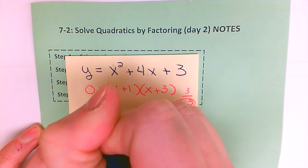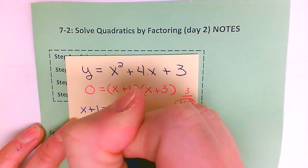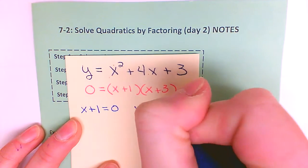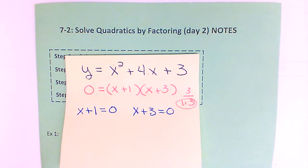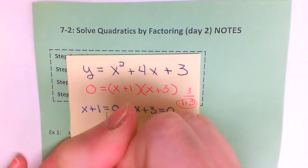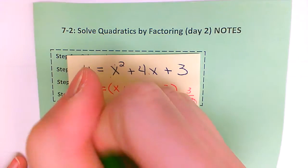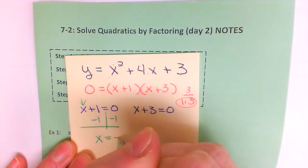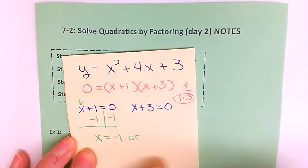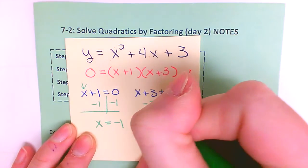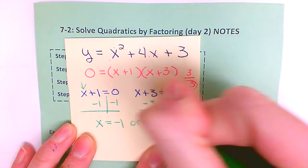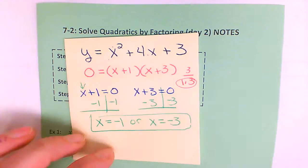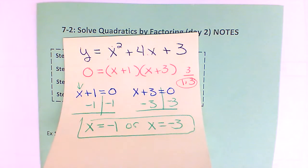Take whatever is in my parentheses — x plus one — and set it equal to zero. x plus three, also set that one equal to zero. Now all I need to do is solve each equation for x. I would subtract one from each side and get x is equal to negative one. On the other side, I subtract the three and get x is equal to negative three. So these are my two x-intercepts for that quadratic equation.